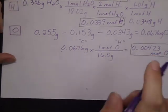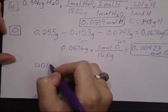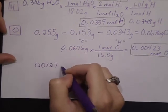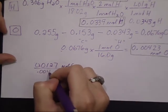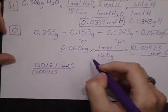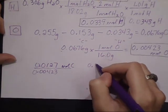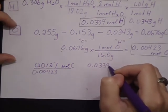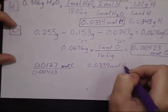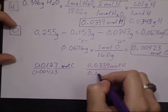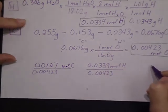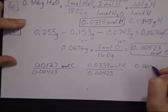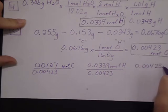So I'll have 0.0127 moles of C divided by 0.00423. And then for the hydrogen, it was 0.0339 moles divided by 0.00423. And then for the oxygen, of course, it will be a ratio of 1, but it certainly never hurts to show your work.